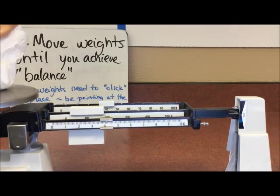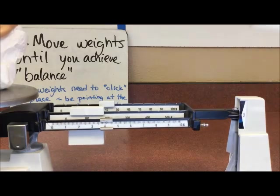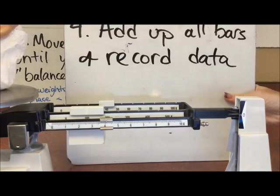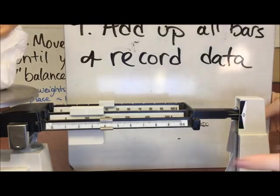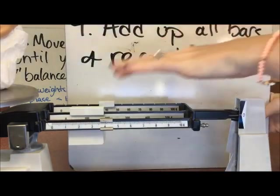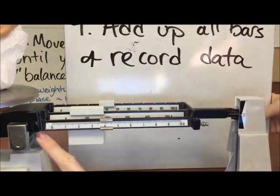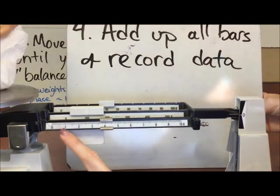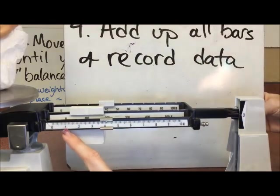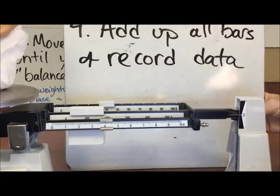The last part is our easiest part. We're going to add up all of the bars and record our data. So if we notice here, we have 100 plus 40. And then at the bottom here, we have 1, 2, 3, 4, 5, 6, 7, 8, 9, 10. So these are our single digits. And then there's 10 little slashies in between each one. So those are decimal points.